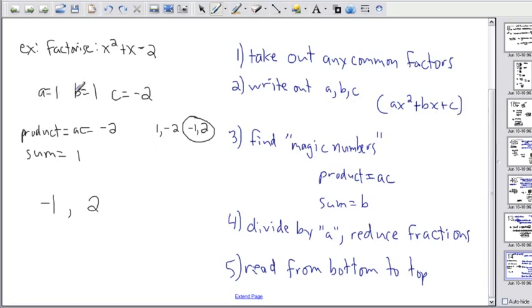And we had gone so far as to find a, b, and c, which is what we were told here. We had found the product and the sum, and we found two magic numbers that actually give you this product and this sum.